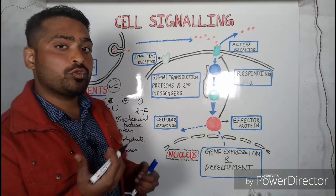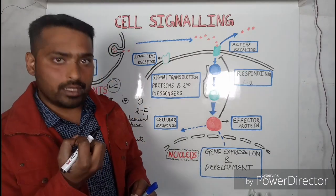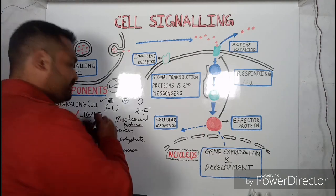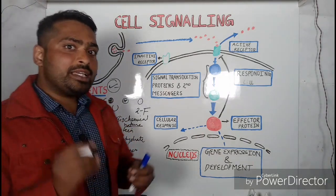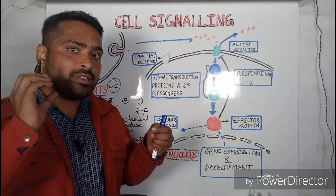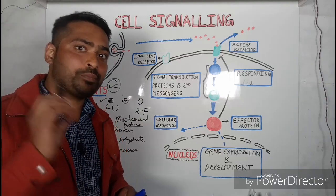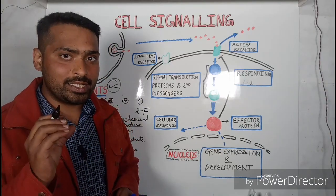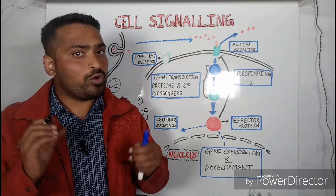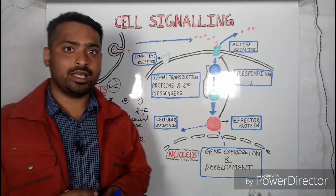The third component is the responding cell — the cell which is ultimately going to accept the signal from the signaling cell. The fourth component, which is the most important, is the receptor. The receptor is the protein which will bind to the signaling molecule produced by the signaling cell. So the receptor is a protein that binds to the signaling molecule.